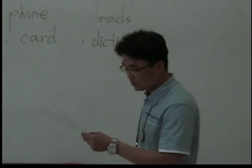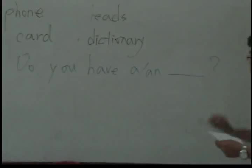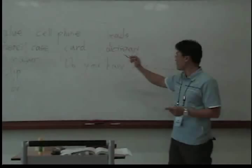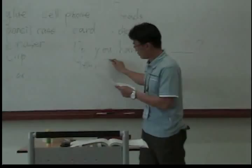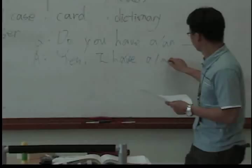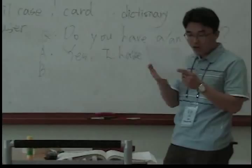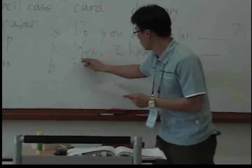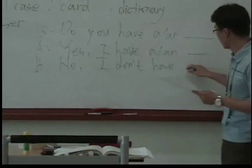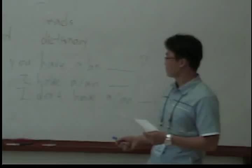Then I write these expressions: 'Do you have a ___?' and 'This is a ___.', so the student can put these names in the blank. If the student has the object, they answer: 'Yes, I have ___.' If the student doesn't have the object, they should answer: 'No, I don't have ___.' Students should speak with a full sentence.